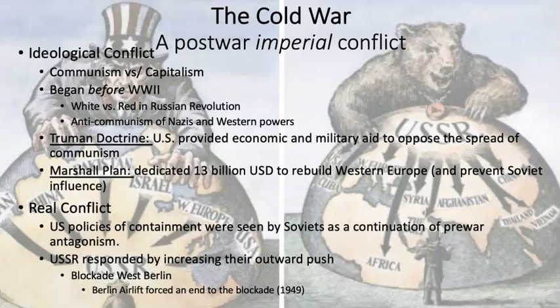This is the second part of the AMSCO Chapter 26 Cold War, Early Cold War lecture. We ended with an overview of the Cold War as an imperial conflict between two empires — the United States being a bona fide empire from 1898 on, and the Soviet Union being a bona fide empire really from World War II on. Now I want to get into briefly some of the specific policies that defined the early Cold War period.